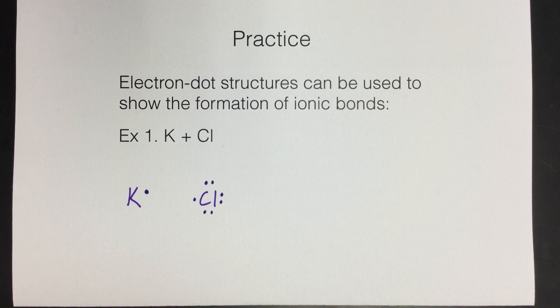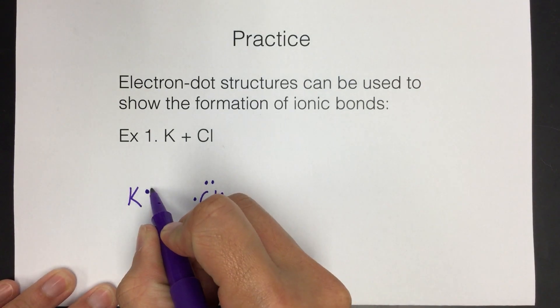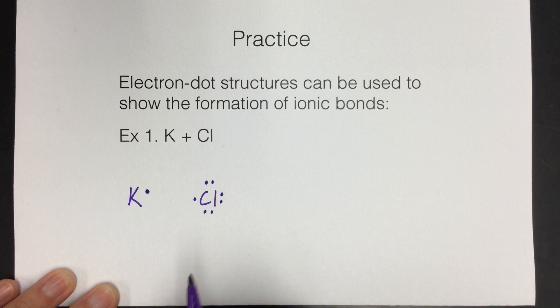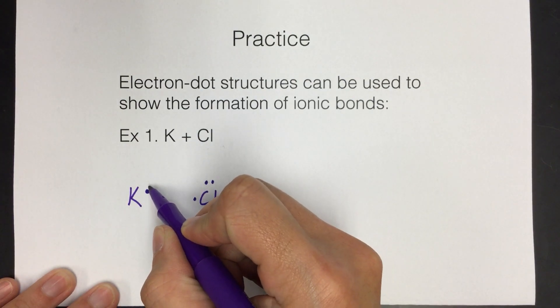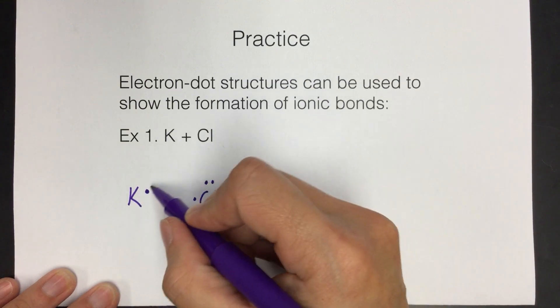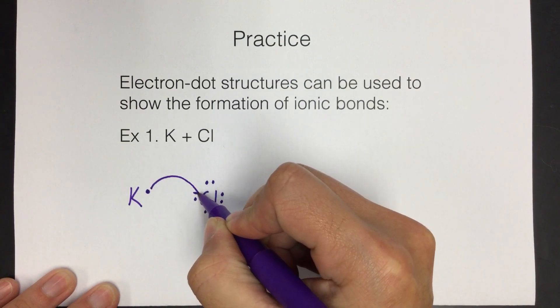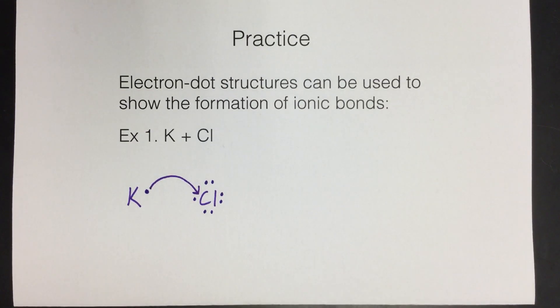You can kind of see, this is an easier example, that we can easily see what should happen between these two atoms so that they can both become happy. We're going to use an arrow to show the movement of the electron. Hopefully you can see here that if potassium gives its electron to chlorine, they'll both be happy. And the way we show that is we need to be very specific about where the arrow is coming from and where it's pointing to. My arrow is going to start over here, and then it's going to be a curved arrow, and I need to point directly to the open spot on the Cl. Notice there's an open spot there. I need to point directly to there.